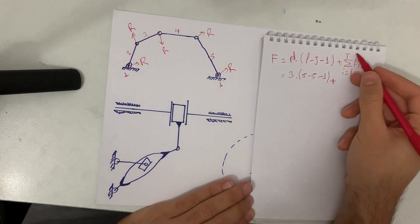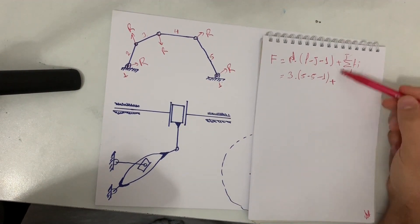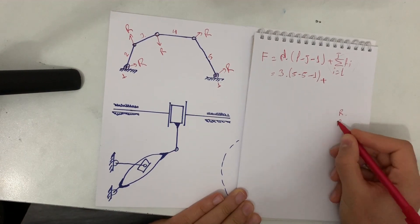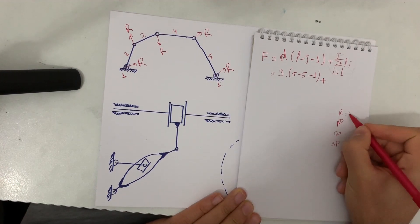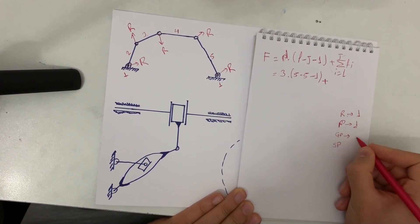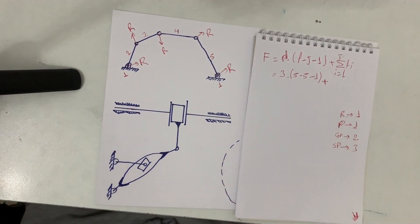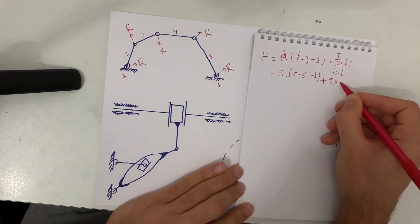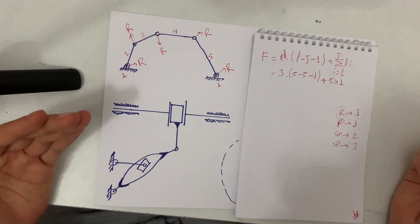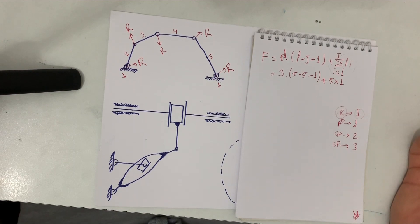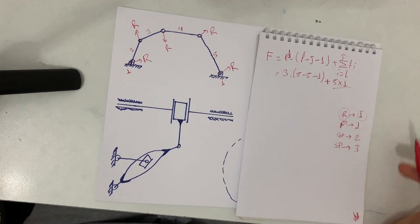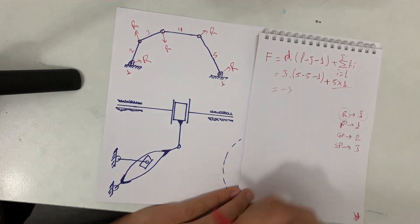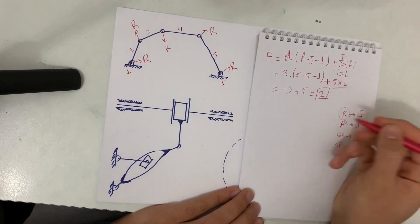Now for the summation term — this part can be confusing but don't worry. For R (revolute), P (prismatic), gear pair, and spherical pair joints, we use: 1 for R, 1 for P, 2 for gear pair, and 3 for spherical pair. We have 5 R joints, so the summation is 5 times 1 = 5. The result is: F = 3 × (5 − 5 − 1) + 5 = 3 × (−1) + 5 = −3 + 5 = 2.